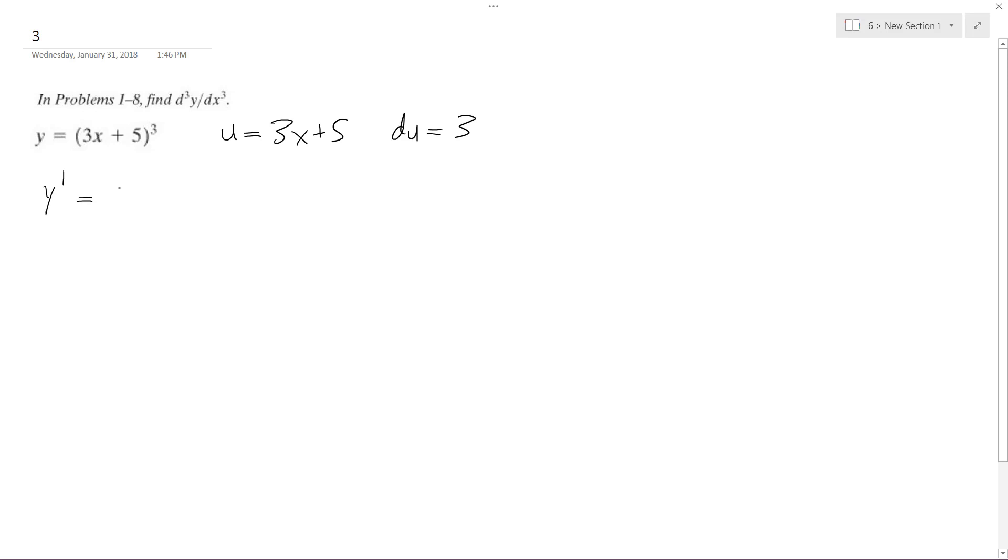For u cubed du in this case, what we end up with is 3u squared, and then the derivative times du, which is just 3.